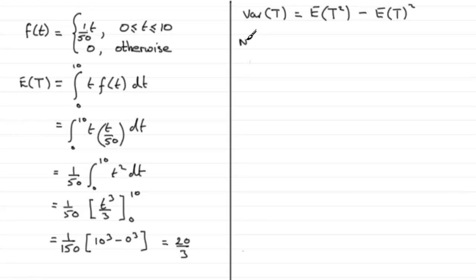We'll put: E(T²) equals... and again we should know this formula. It's the integral of t squared this time, times f(t) dt, with our limits again going from 0 to 10.